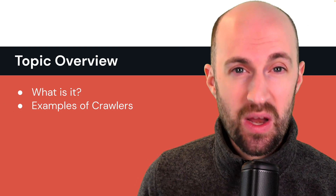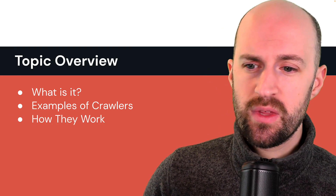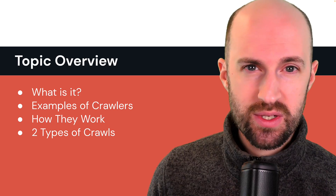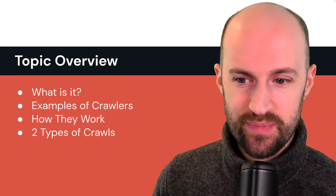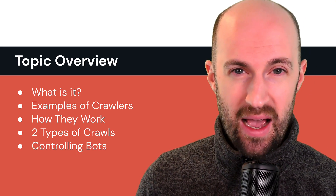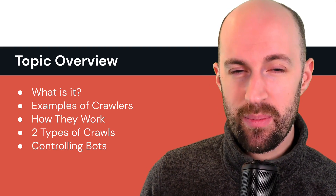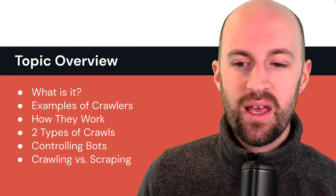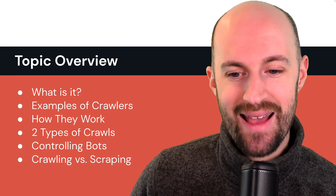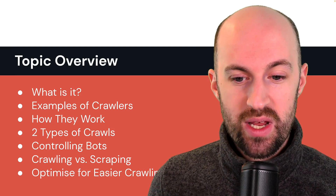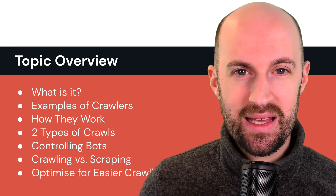So what you'll learn in this video: basically what website crawling is all about, examples of different types of web crawlers, how they actually work, two different types of crawls both in general and more specific to Google, controlling bots, how to make sure they go to the right places on your site, how to stop them from visiting certain areas, the differences between crawling and scraping, and how to optimize your website for easier crawling so that it's easily discoverable.